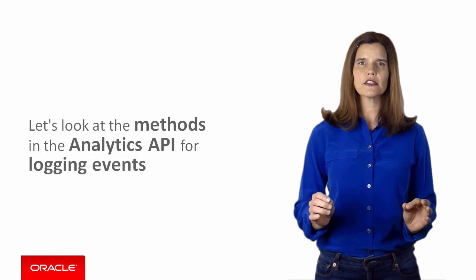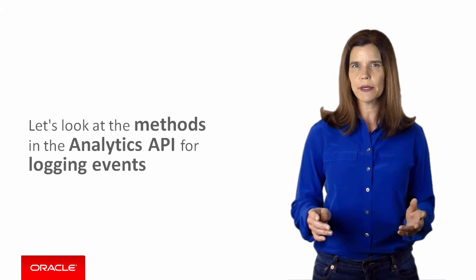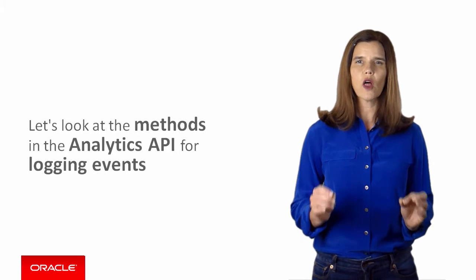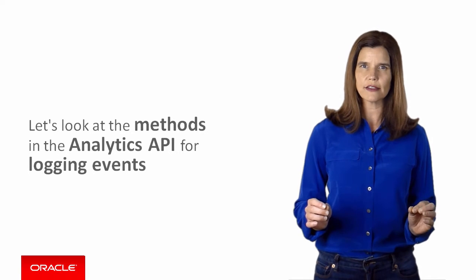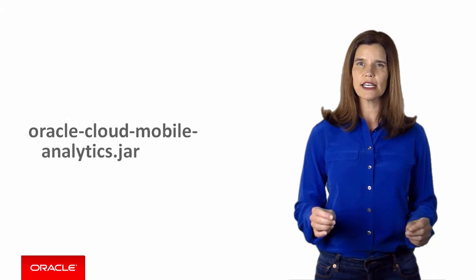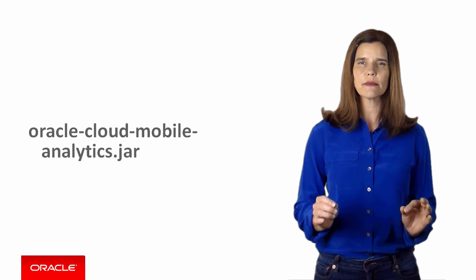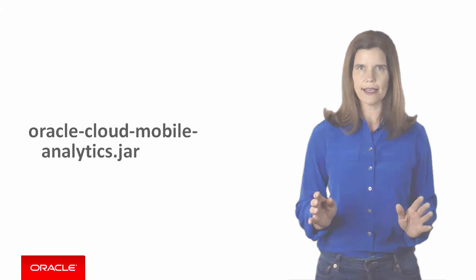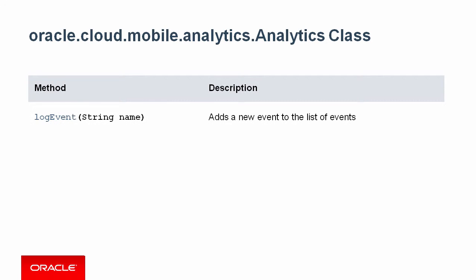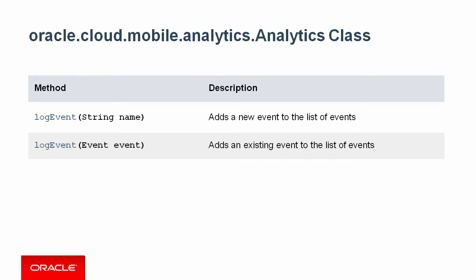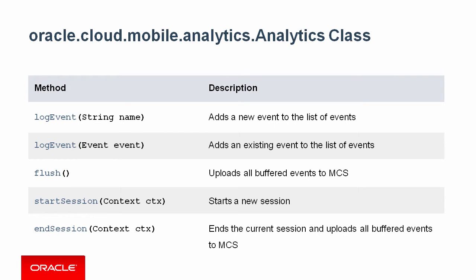Let's take a look at the methods that are available in the analytics API for logging information about custom events. The Oracle Mobile Analytics Jar Library includes two classes that enable mobile applications to post events: the Analytics and Event classes. The Analytics class contains methods for logging new or existing events, for posting all events to the server, and starting and ending sessions.